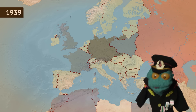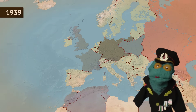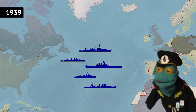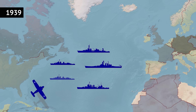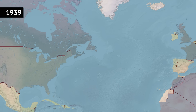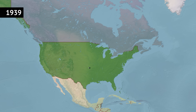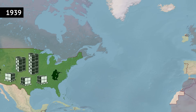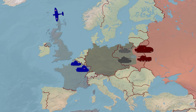Imagine an alternate history where the US is adamant at staying neutral in WW2. Not only does it not send its armed forces anywhere, but it doesn't want to have anything to do with any warring side. No economic help and no big government trade with any belligerent. Come September 1939, the US goes into full self-isolation mode and simply doesn't want to be a part of it. How would such a move shape the course of WW2?